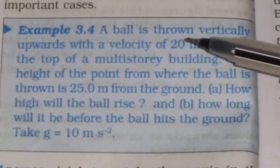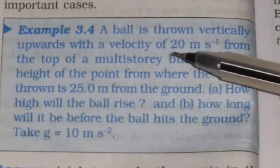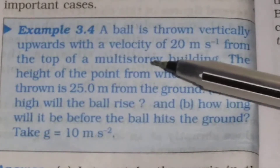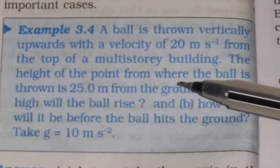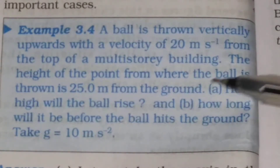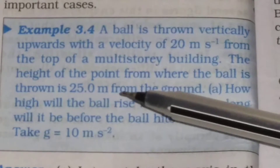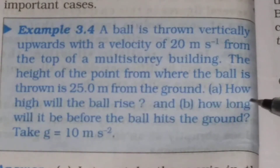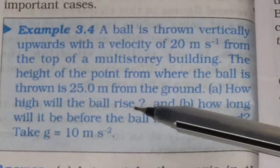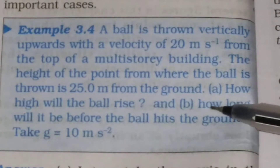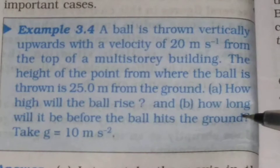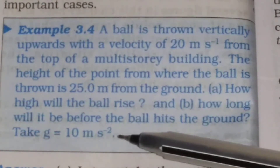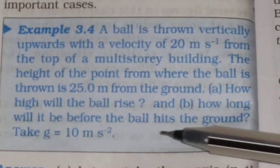Example 3.4: A ball is thrown vertically upwards with a velocity of 20 meters per second from the top of a multi-story building. The height of the point from where the ball is thrown is 25 meters from the ground. You have to find out: how high will the ball rise, and how long will it be before the ball hits the ground? Take the value of acceleration due to gravity as 10 meters per second squared.